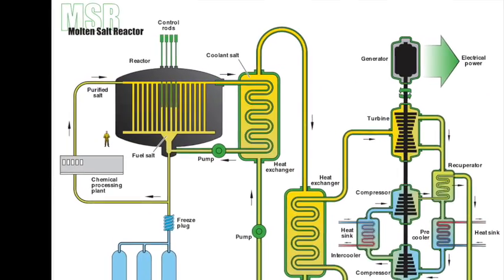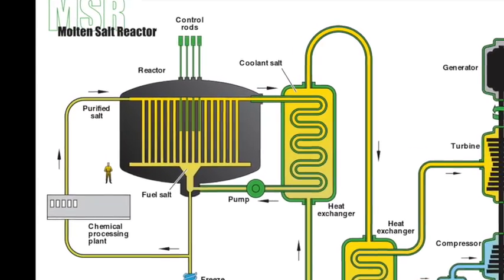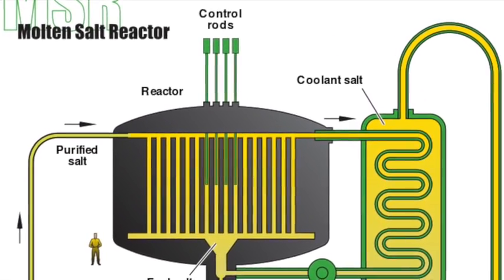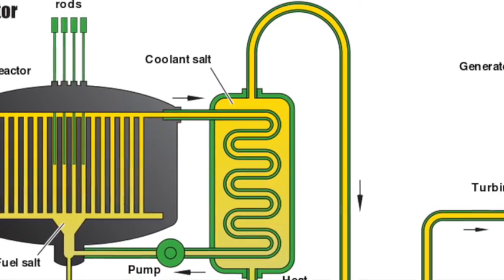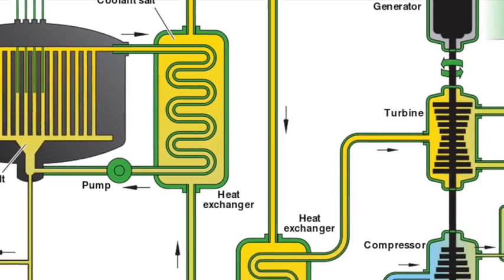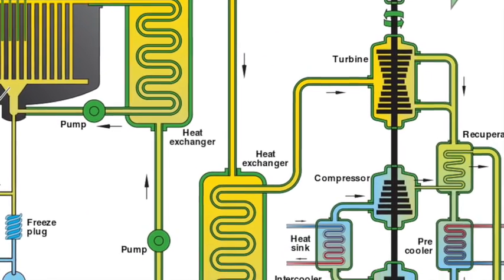The reactor core, where fission occurs, is neutron dense, where the molten fuel and coolant mixture flows through. There are exit pipes from the core, where the molten salt flows through a heat exchanger, which, when combined with another heat exchanger and a power generation cycle, produces electricity.